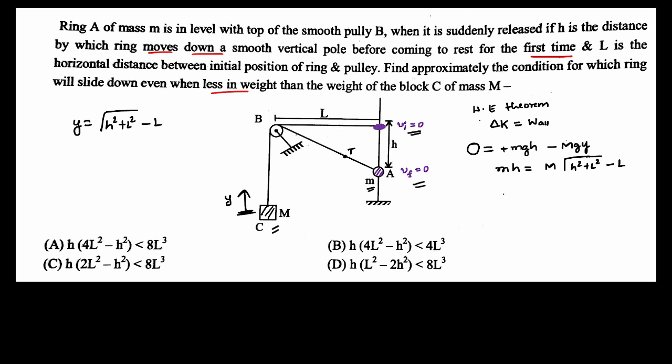Now our story is we need to find the approximate condition, right? So small m by capital M I'll be writing it as root of h squared plus L squared minus L, whole thing divided by h.